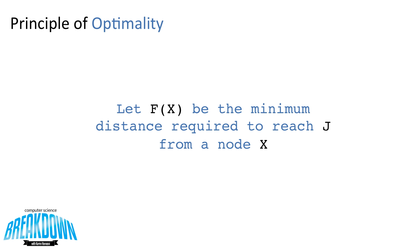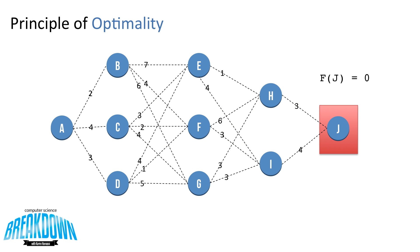So let's define a function f of x, and let that function be the minimum distance required to reach J from a node X. So starting at the end at node J, we know that f of J is equal to 0, because there's no path cost to get to itself.